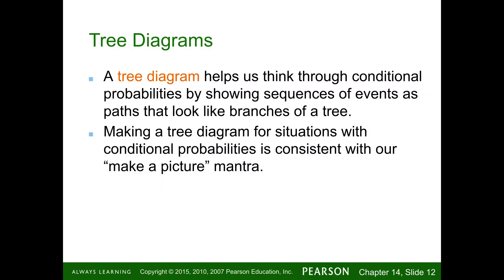A tree diagram helps us think about conditional probabilities by showing the sequence of events as paths that look like branches of a tree. A tree diagram is great to wrap your head around, but you can't realistically draw one for 52 cards in a deck — that's a lot. It does help for flipping coins and small scenarios. Making a tree diagram for conditional probability situations is consistent with our 'make a picture' strategy. If you roll two dice, you could roll a one, two, or three on the first — a tree diagram lists all the outcomes and lets you calculate probabilities.